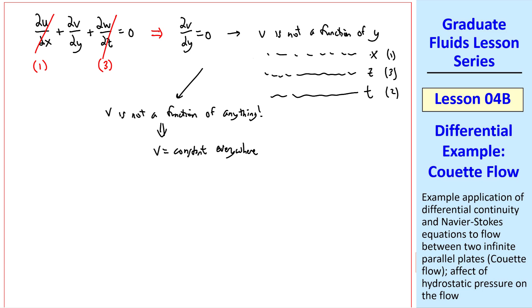In other words, v is not a function of anything. The only way this is possible is if v is constant everywhere. What is the constant? Let's apply a boundary condition. At y equals zero, the bottom wall, we know that v equals zero. There can't be any flow through the wall. So that has to be the constant. In other words, v equals zero everywhere. This is the answer to part a.